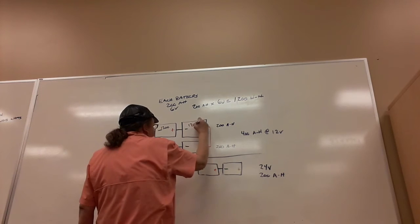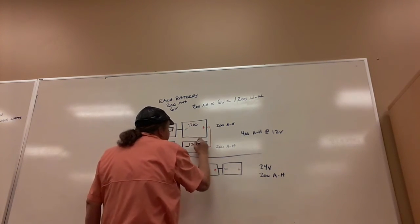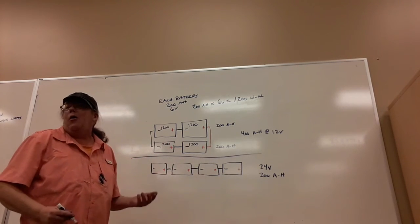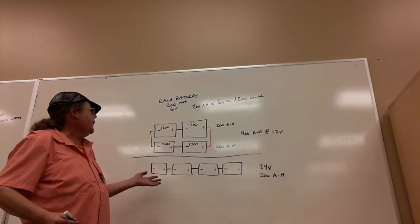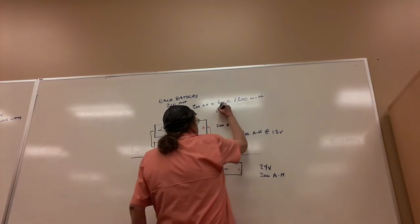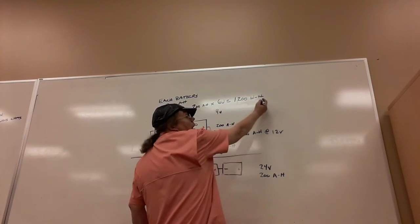Battery bank 1,200, 1,200, 1,200, and the same down here. So all you have to do to figure out your watt hour capacity of both of these battery banks is take the number of batteries, four, times the watt hours capacity.